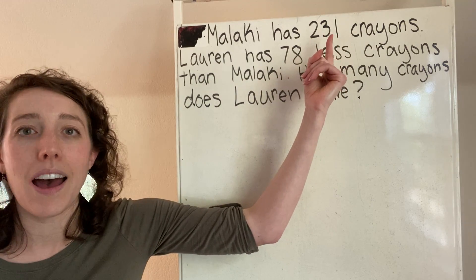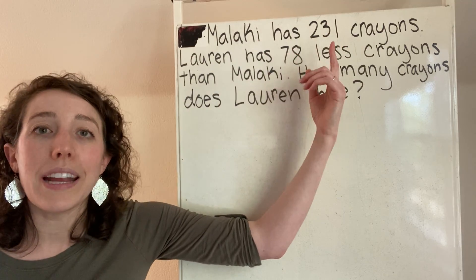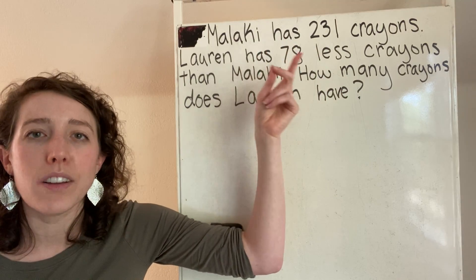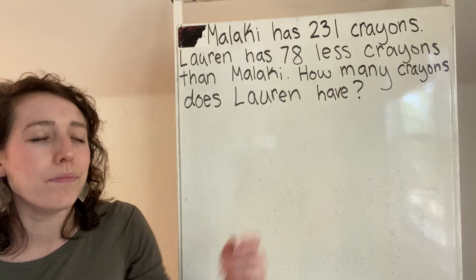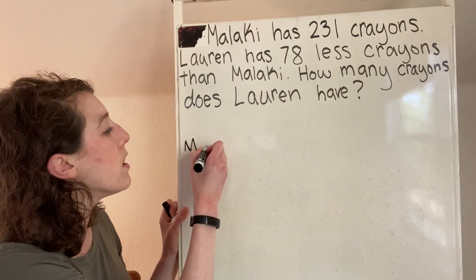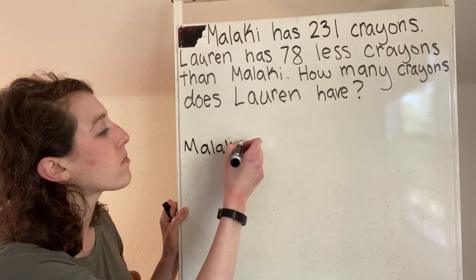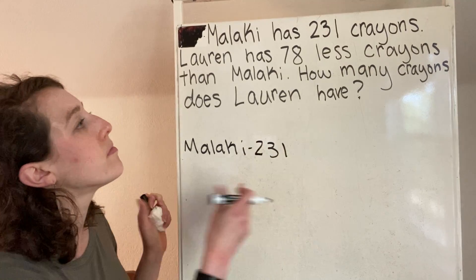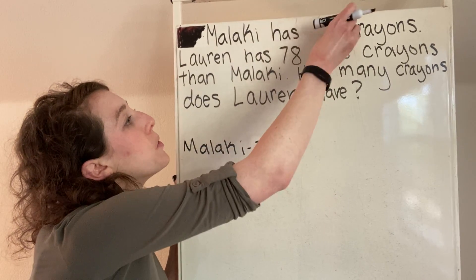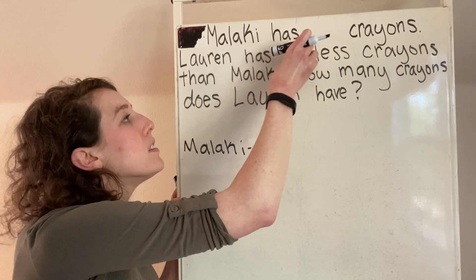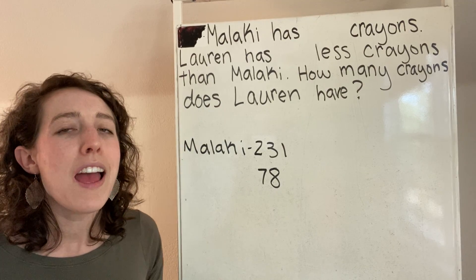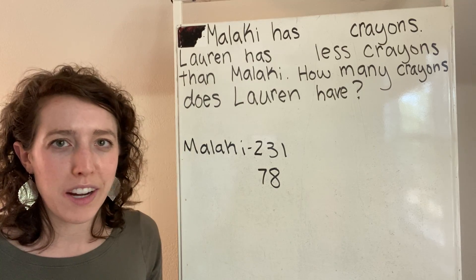You can see Malachi has the larger number, so when I change my problem I'm going to make sure that Malachi still has more crayons than Lauren. We're still going to solve this with the big numbers in a minute. So I'm going to make a note over here that Malachi is at 231 and that my other number was 78. So I'm going to erase these numbers and put smaller numbers in their place, and I think you're going to see that figuring this out is a lot easier when your numbers are smaller.